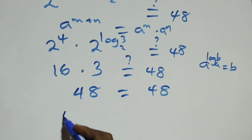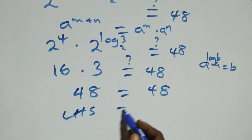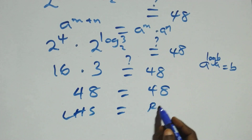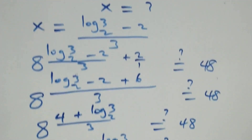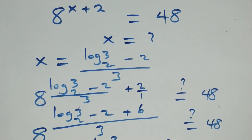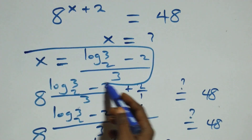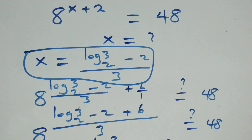We have the left hand side equals to the right hand side. Therefore, we conclude that x equals log 3 base 2 minus 2, all over 3, satisfies this given problem. Thank you for watching, don't forget to subscribe for more videos and turn the notification bell on. Share this video with a thumbs up and put your comments. See you next class, bye for now.